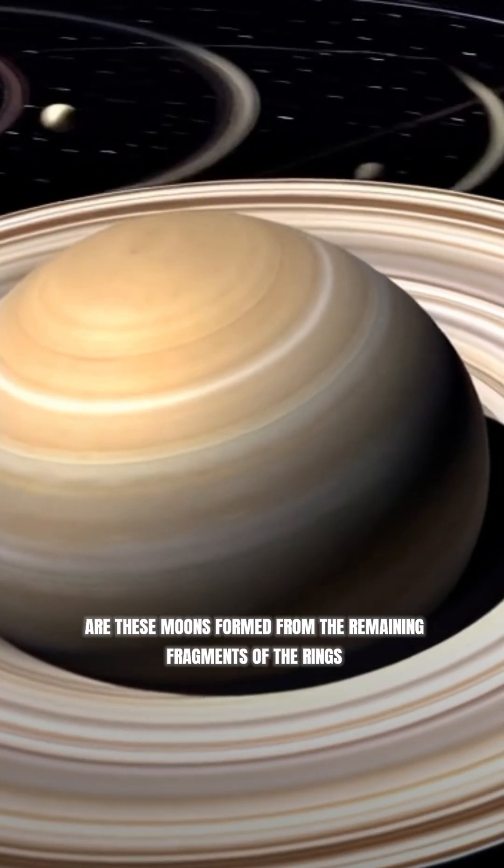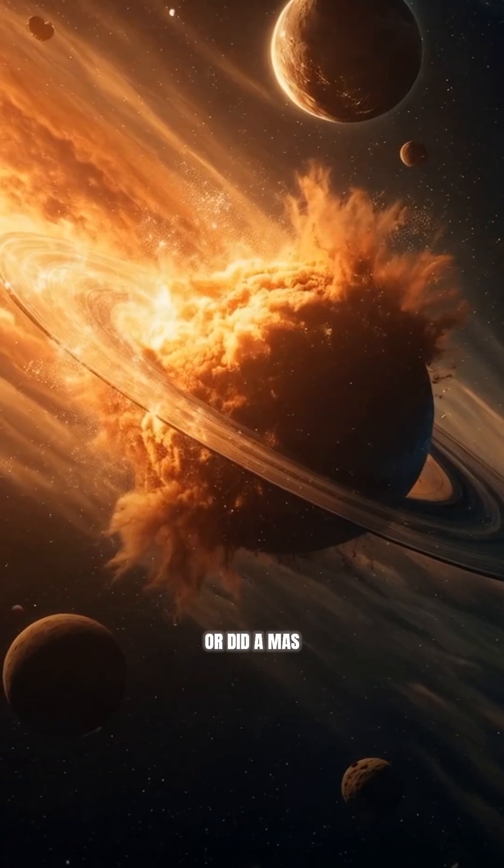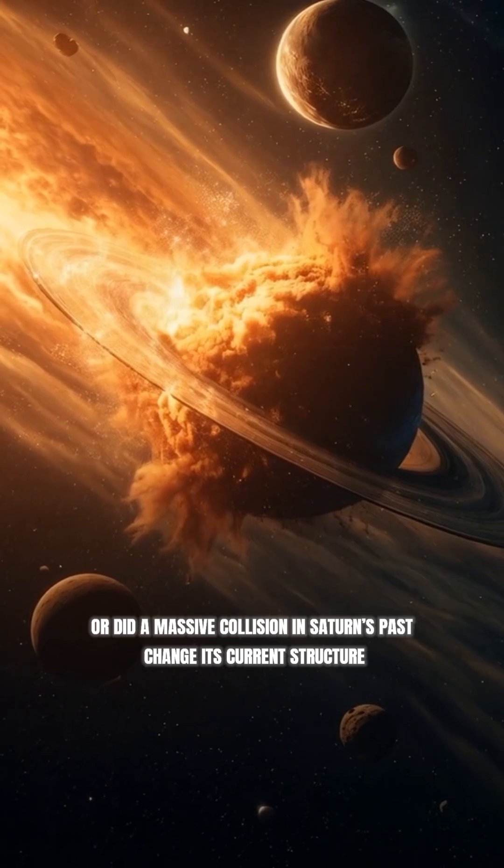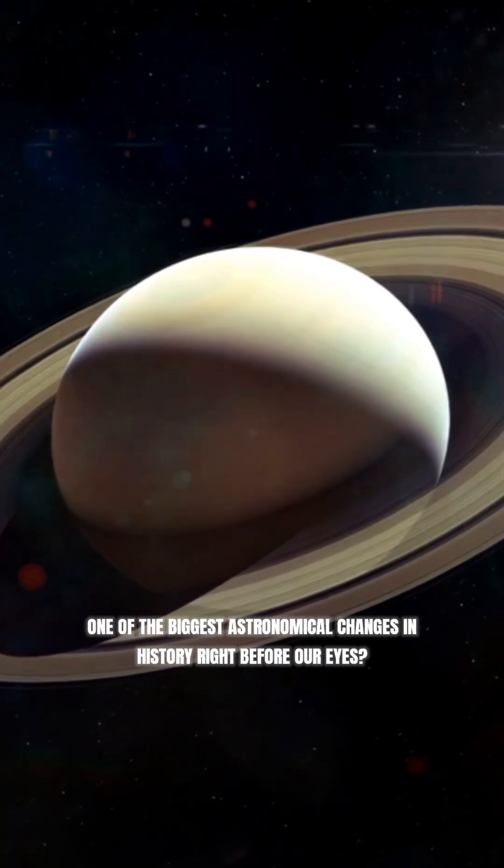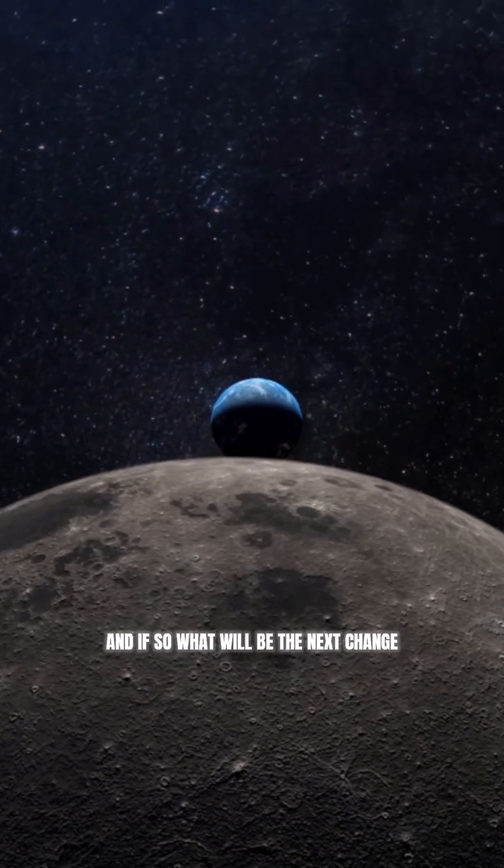But the question is, are these moons formed from the remaining fragments of the rings? Or did a massive collision in Saturn's past change its current structure? Are we witnessing one of the biggest astronomical changes in history right before our eyes? And if so, what will be the next change?